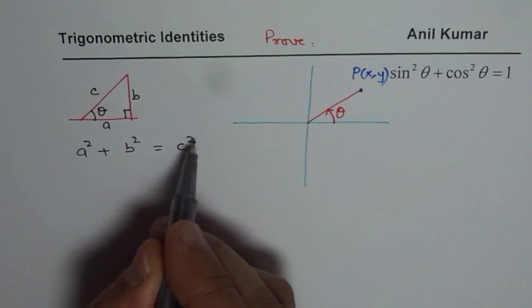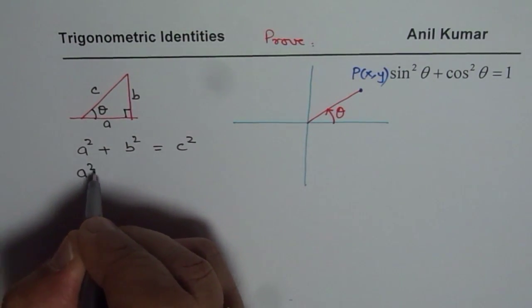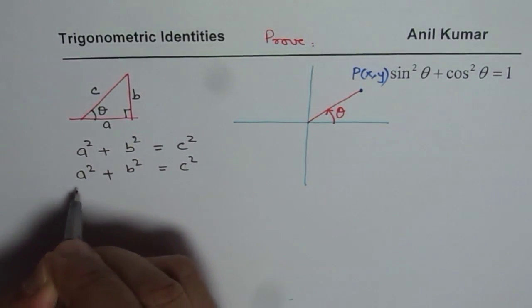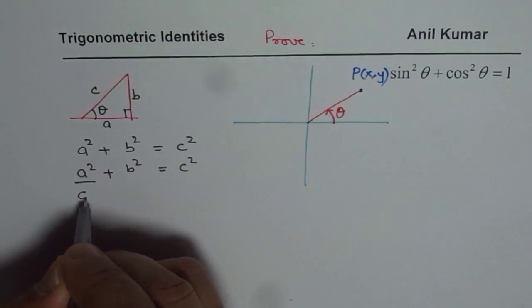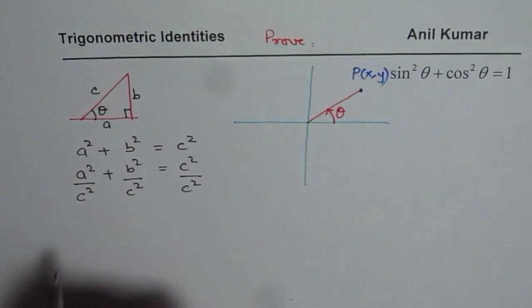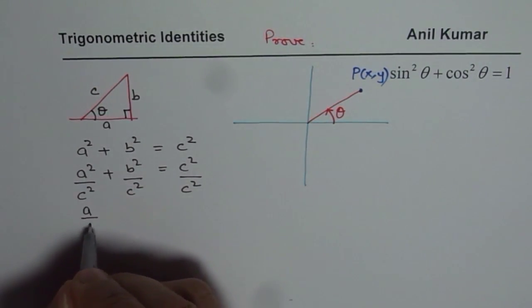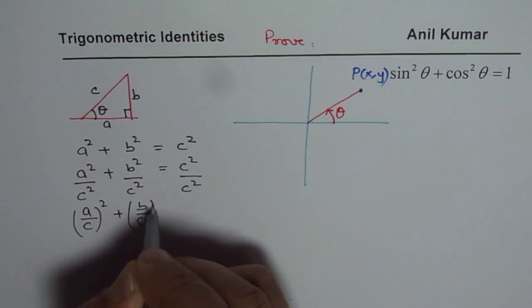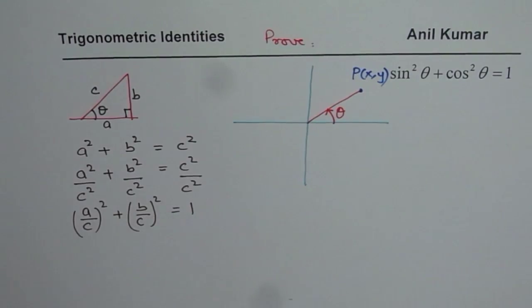If I divide by c square then what happens? See, a square plus b square equals to c square. So I am dividing each term by c square. So I am dividing that by c square. So what we get here is a over c whole square plus b over c whole square equals to 1.